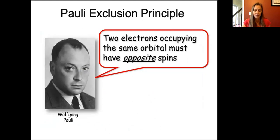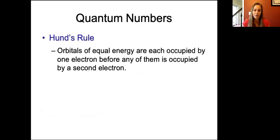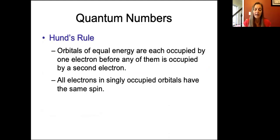Then we have Hund's rule, which helps us figure out where to allocate electrons. Hund's rule says that if we have orbitals of equal energy — the three p orbitals for example — each needs to be occupied by one electron before any of them is occupied by a second electron. That's because electrons, if they have the space to not be in the same space as one another, will be in different spaces due to repulsion. In singly occupied orbitals, all electrons will have the same spin, which contributes to things like magnetism.